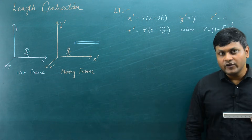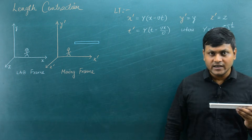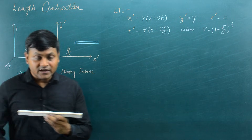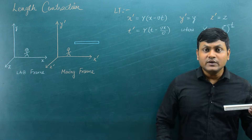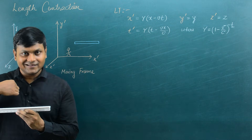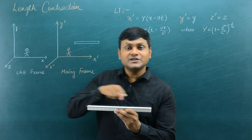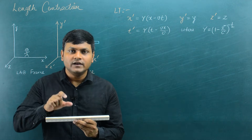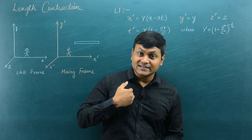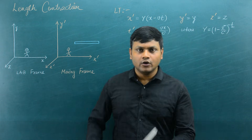Now, if I start moving in a particular direction — if I start going at very high velocities in a particular direction and I hold the scale with me — that means the scale is also moving along with me at that particular velocity. It means that the scale is at rest with respect to me. So in that state, I will measure the length of the scale to be 30 centimeters. So in both these situations, when I as an observer am not in relative motion with respect to the object, I will not see length contraction.